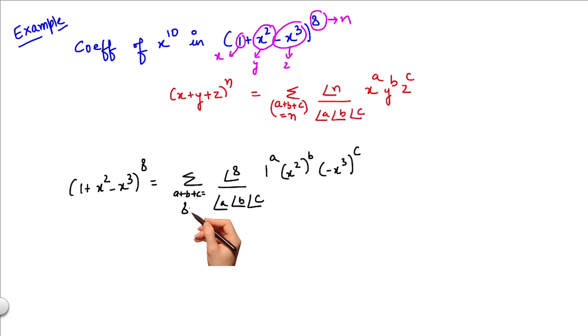Solving this further, I get the summation of 8!/(a!b!c!) × x^(2b+3c) × (-1)^c.